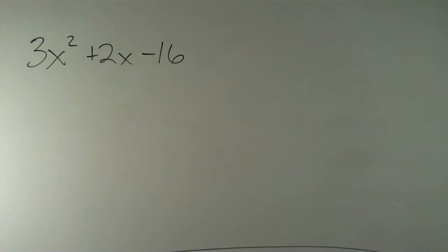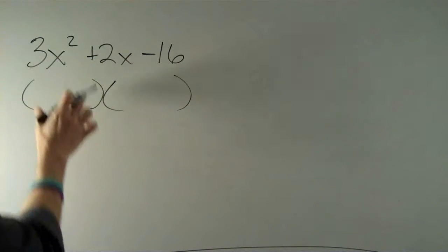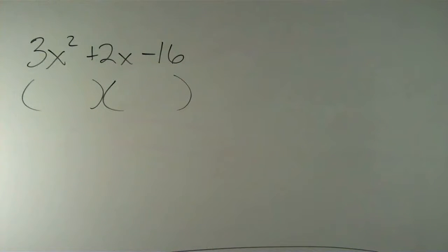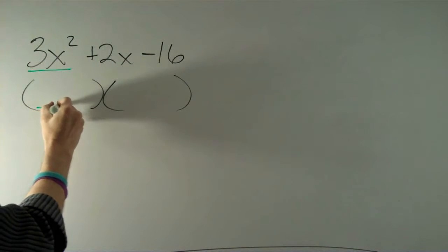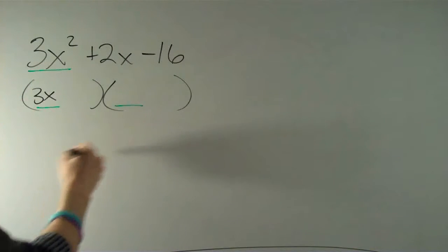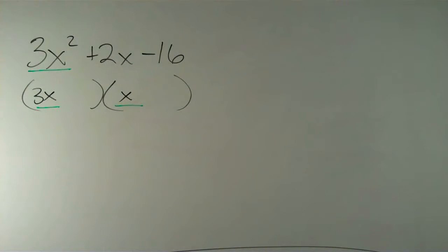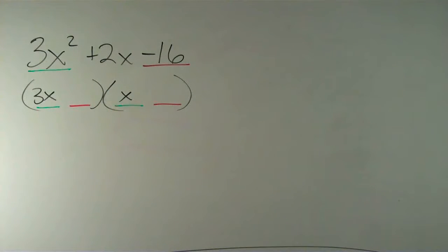We have this trinomial that is a product of two binomials. So let me put my parentheses here where I'll put my two binomials. I know from experience that my first term of the trinomial is the product of my first two terms, and really the only way I'm going to get 3x squared is by having 3x in one and x in the other.